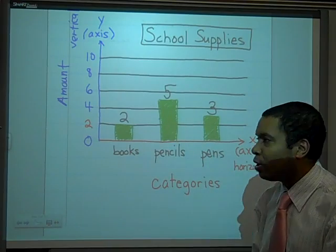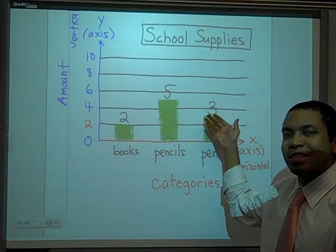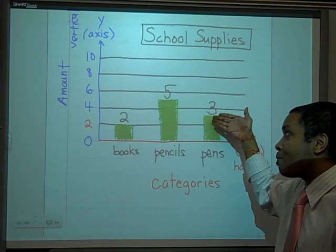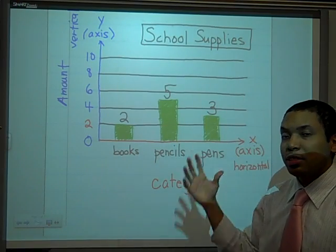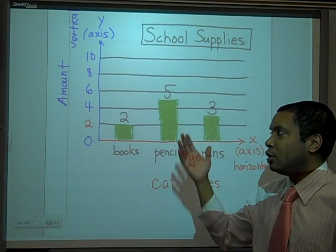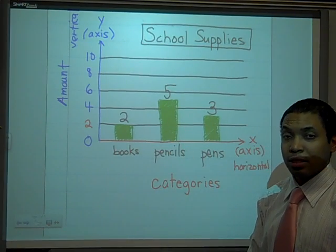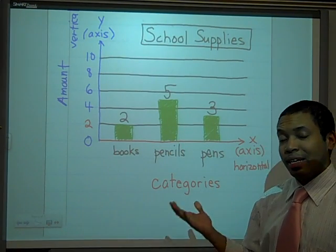I can say that I have more pencils than books. I can say that I have less pens than pencils. I can say that I have more pens than books. Now how many total school supplies do I have together? Well, I'd add up two plus five, which is seven, plus three, which is ten. I have ten school supplies.